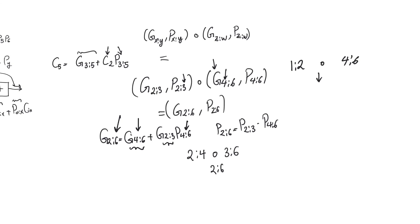The dot operator is implemented in CMOS using two gates: the first gate produces the resultant group propagate, which is simply an AND gate, and the second is a sum-of-products expression which gives you the group generate.